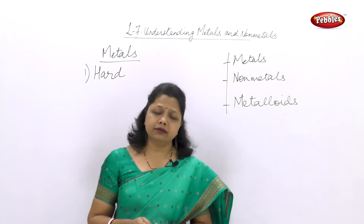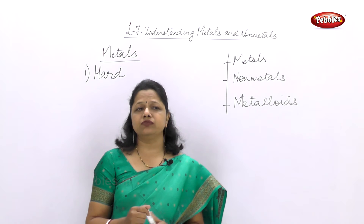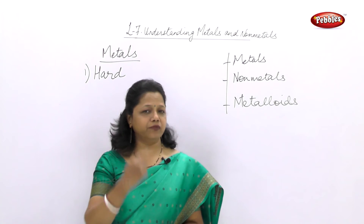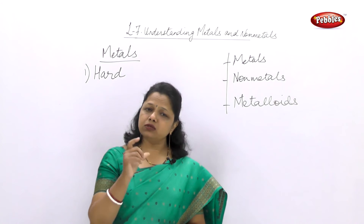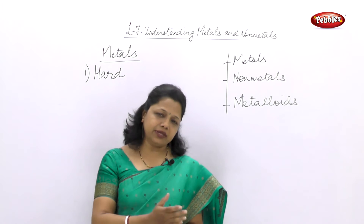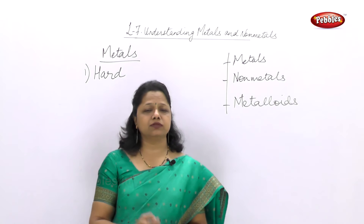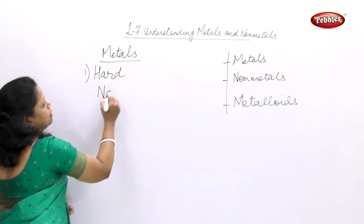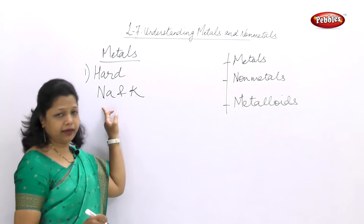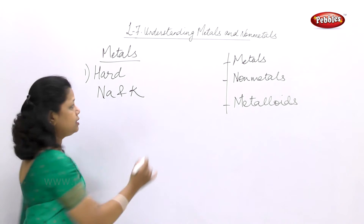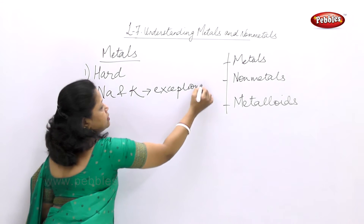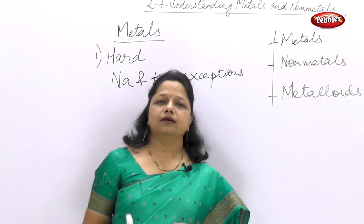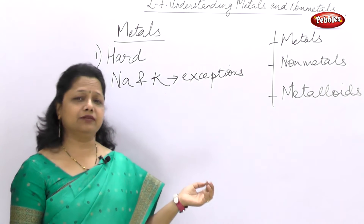Are there any metals which are not hard? Yes, there are some metals which are not as hard as others — metals which are soft and can even be cut with a knife. There are two such metals: sodium and potassium. They are so soft that they can easily be cut into two pieces. So there are some exceptions. The exceptions are sodium (symbol Na) and potassium (symbol K). They are metals, but they are not hard like other metals.